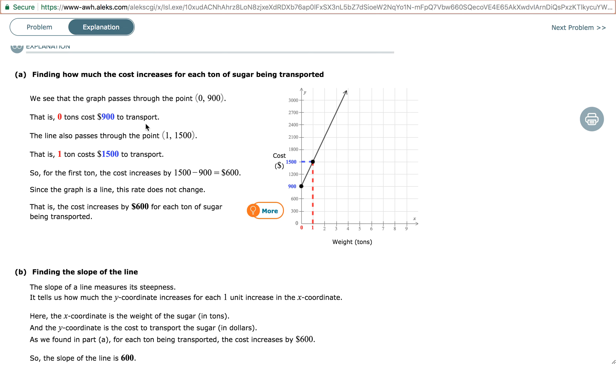So that means for zero tons, the cost is $900. Now, we can also see the point 1, 1500. In other words, that means for one ton, the cost is $1,500 to transport.